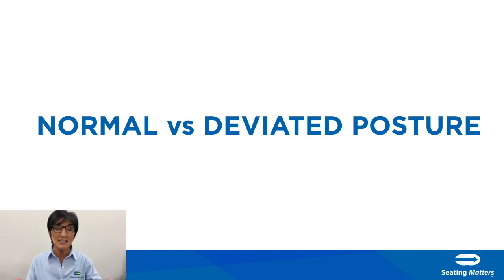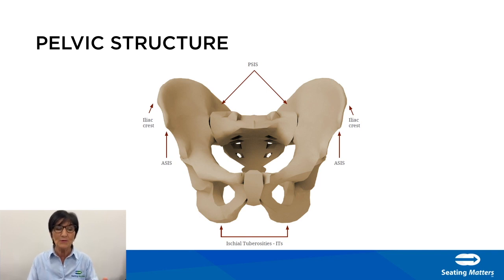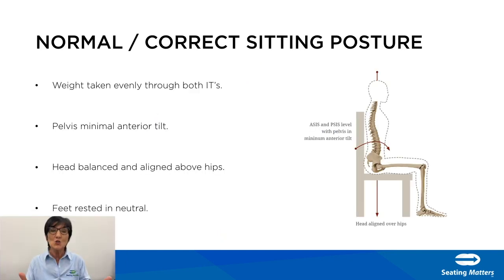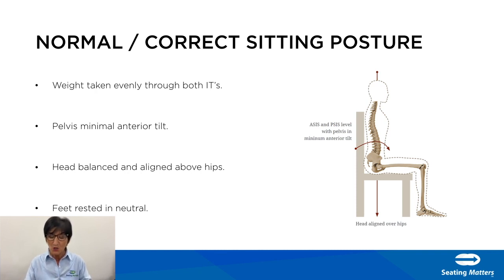This week we're going to talk about normal versus deviated posture. Let's start with the structure of the pelvis, which is the key, the cornerstone to sitting. Normal posture is when weight is taken evenly through both ITs — the ischial tuberosities, or the bony prominences you sit on. The pelvis is in a minimal anterior tilt, the head is balanced and aligned above the hips, and the feet are rested in neutral.